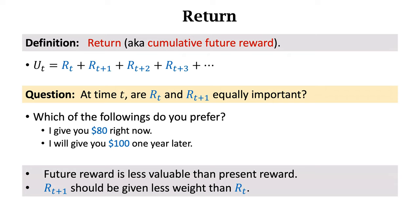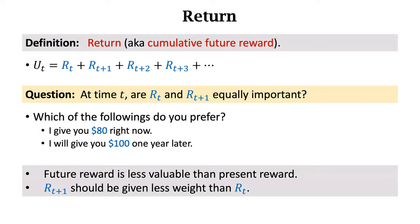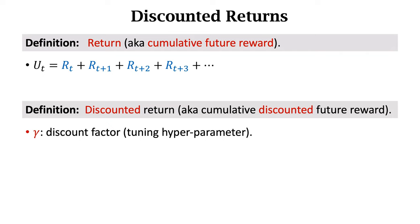We concluded that future reward is less valuable than present reward, so RT+1 should get less weight than RT. Since future rewards are less important, they should be discounted. Let gamma be the discount factor, between 0 and 1. If you believe future reward is equally important as current reward, set gamma to 1. If future reward is not important, set gamma to a small number. Gamma is a hyperparameter that should be tuned.